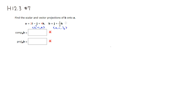To find the scalar projection, or component projection, comp_A of B, we take the dot product of A and B, then divide by the magnitude of vector A.